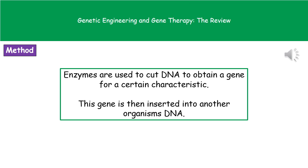How we actually go about doing this is we're going to be using enzymes. We take an enzyme and it cuts the DNA to obtain a particular gene. So we've identified the gene we want for a certain characteristic, and then we use a specific enzyme to cut the DNA to get that gene. We can then take the gene and insert it into another organism's DNA.